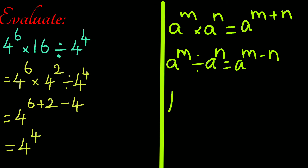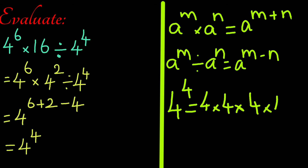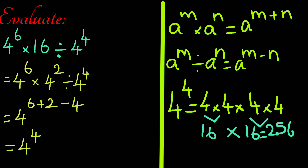4 to the power 4 is 4 times 4 times 4 times 4. 4 times 4 is 16, and 16 times 16 is 256. We have the solution as 256.